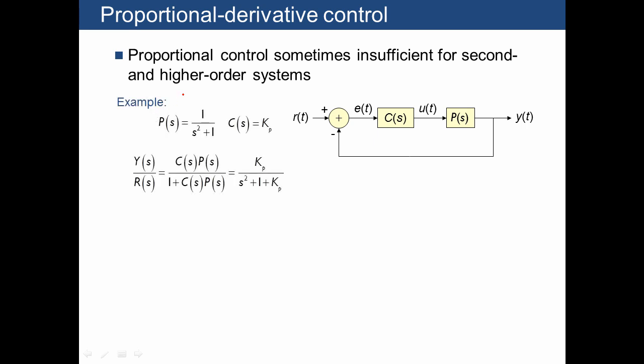Here's an example. This plant is an oscillatory system such as x dot plus x equals u. This system has no damping, and so if you apply a step input, you'll just get a continuing oscillation.